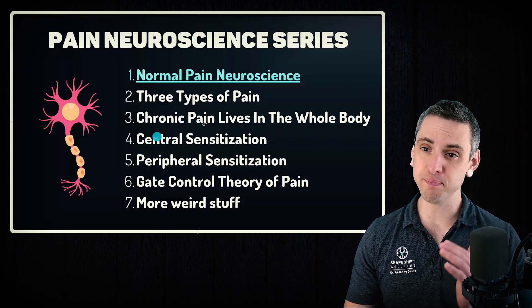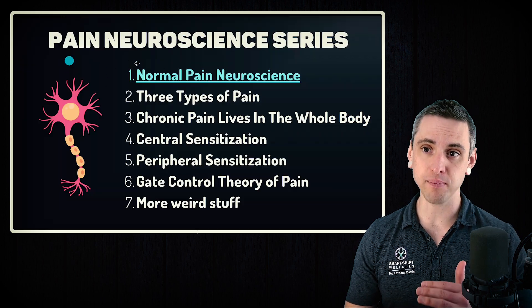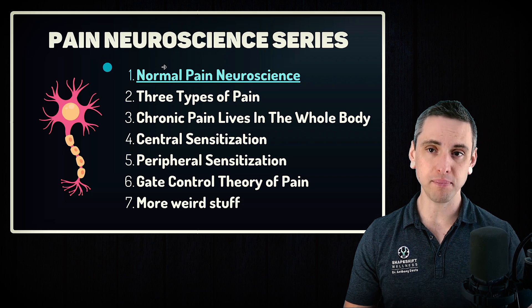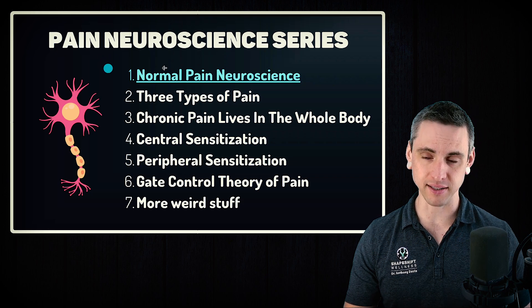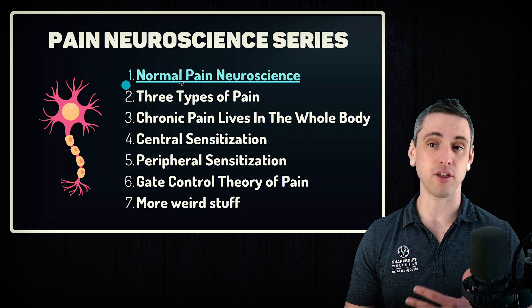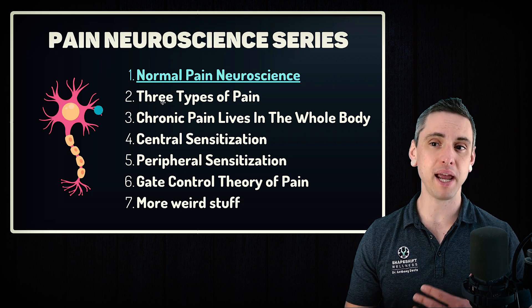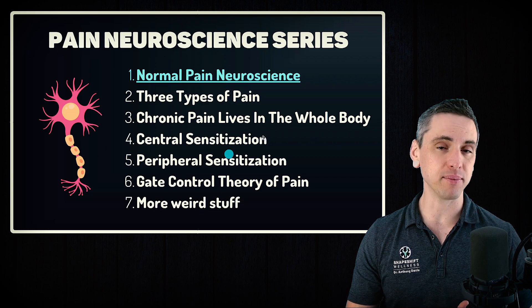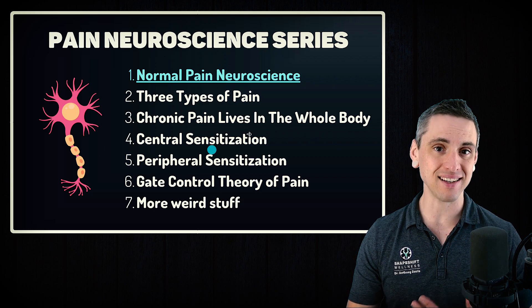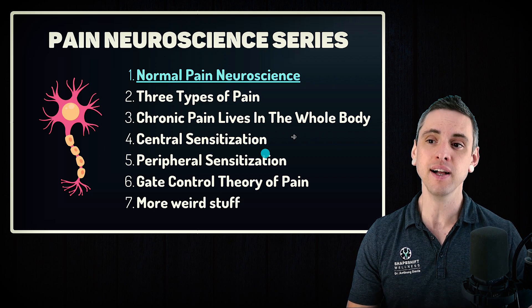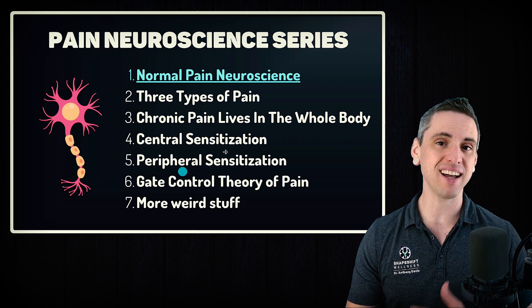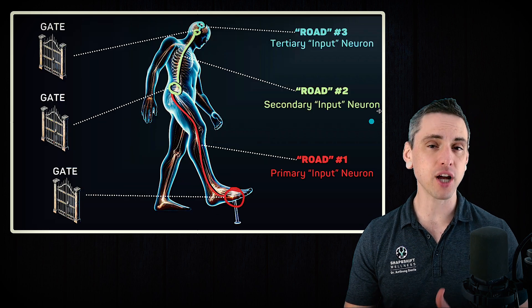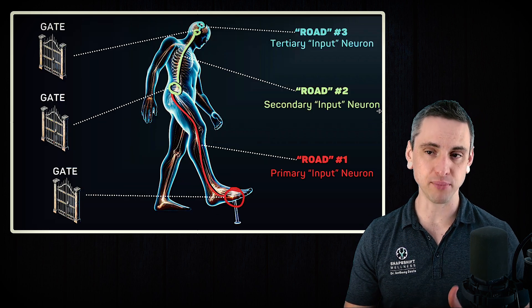This is part of a big series on pain neuroscience. Today we're talking about normal pain processing, but then we'll go on to discuss the three types of pain, how chronic pain lives in the whole body, how the body can become sensitized and hypersensitive, and how to fix that. But today we're talking about normal pain processing.